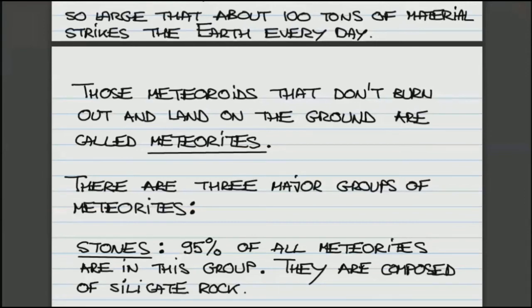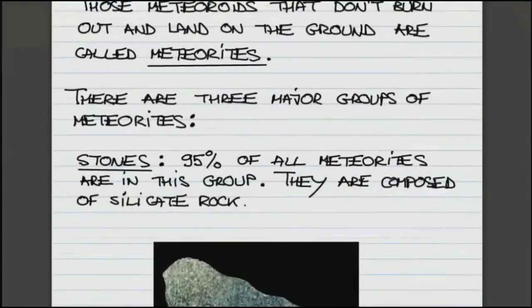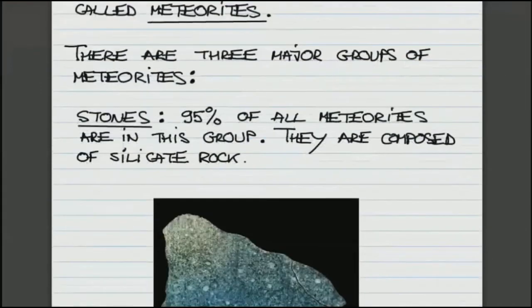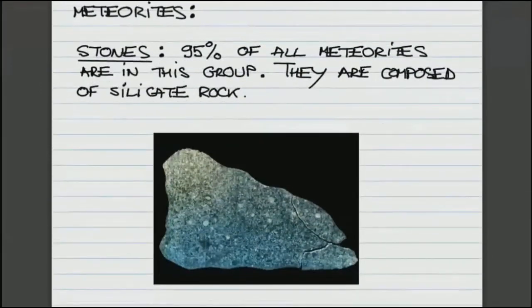Again, classification of meteorites based on their composition. The first and the largest group are so-called stones. Turns out that 95 percent of all meteorites are in this group.